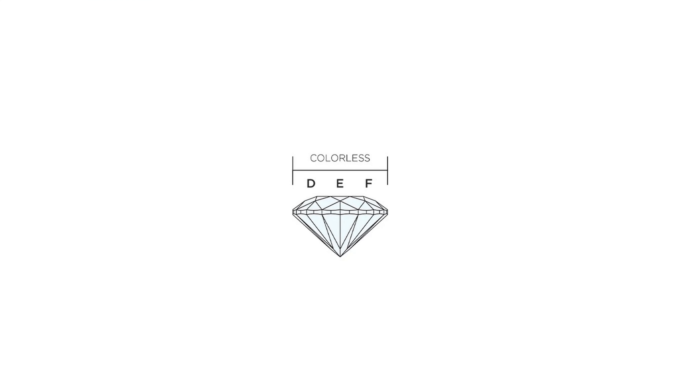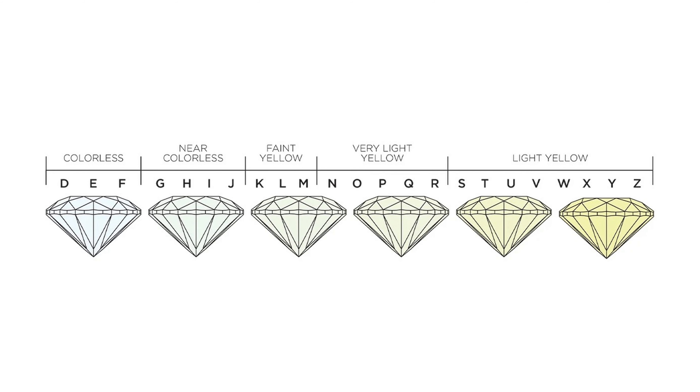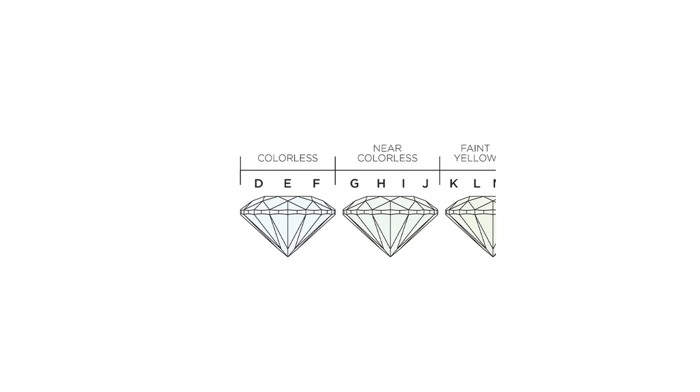Let's move on to color. When it comes to color, moissanites are graded as colorless or near colorless. Every moissanite offered at Olive Ave is colorless. Diamonds have their own color grading scale ranging from D to Z. D is the highest color grade, meaning the diamond has the least amount of visible color. The lower you get on the color grading scale, the more yellow will be present in the stone. The Olive Ave standard is H color and above, ensuring that each stone has a bright, sparkling appearance.